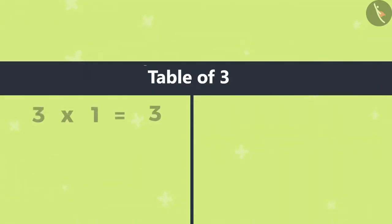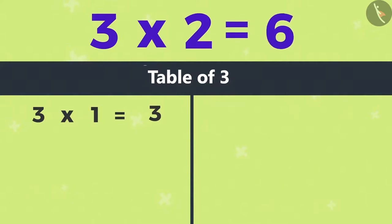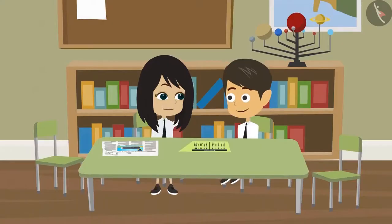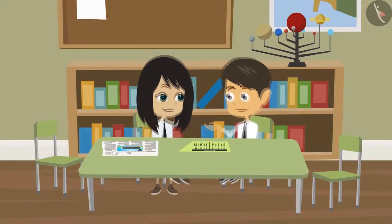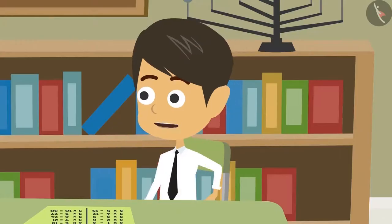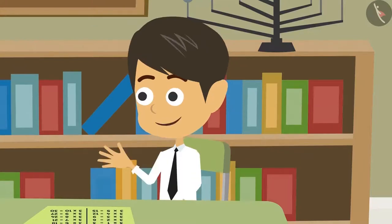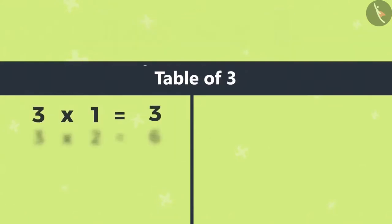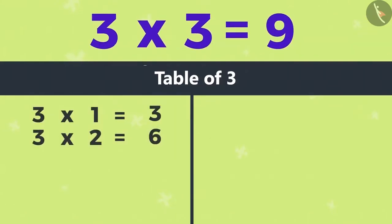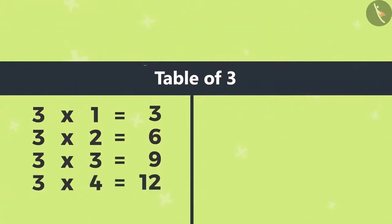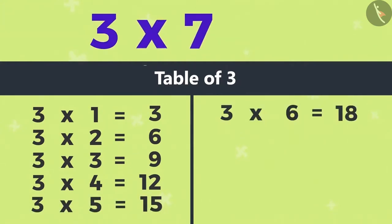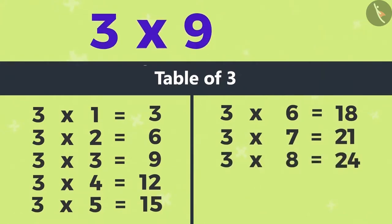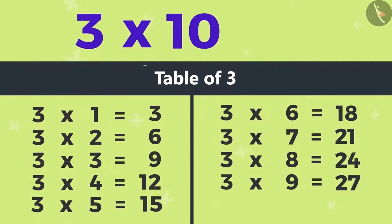Three times one equals three. Three times two equals six. Hey, what are you doing? I am learning the table. No, you can't memorize tables like this. It is memorized in the form of a song. Like this. Three ones are three. Three twos are six. Three threes are nine. Three fours are twelve. Three fives are fifteen. Three sixes are eighteen. Three sevens are twenty-one. Three eights are twenty-four. Three nines are twenty-seven. Three tens are thirty.